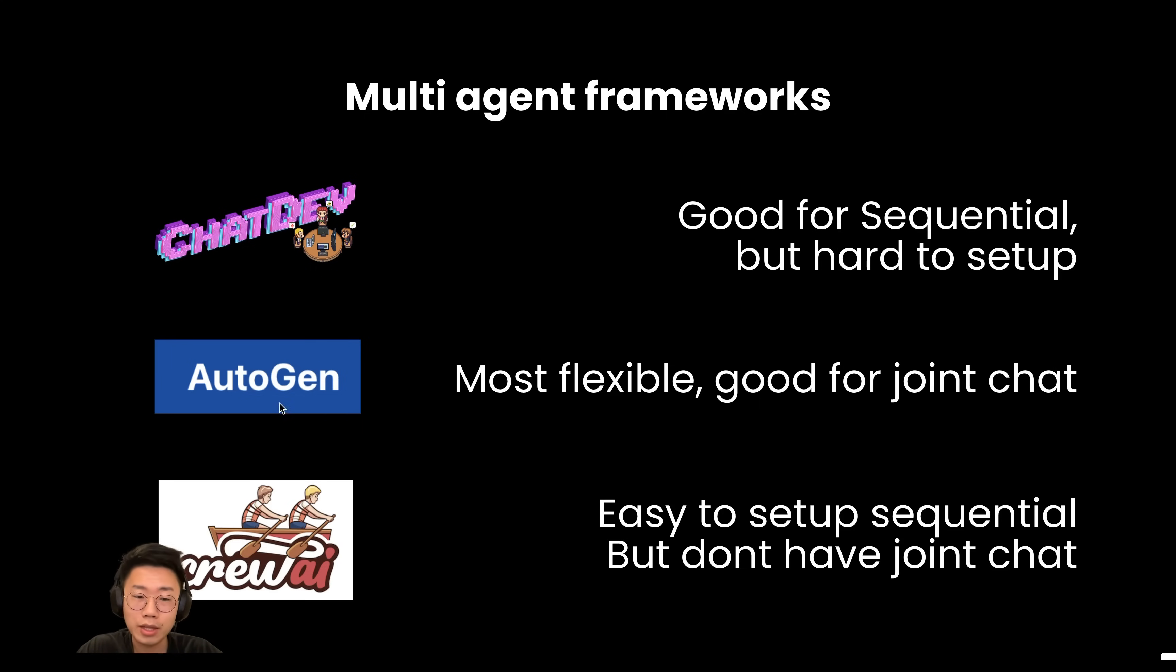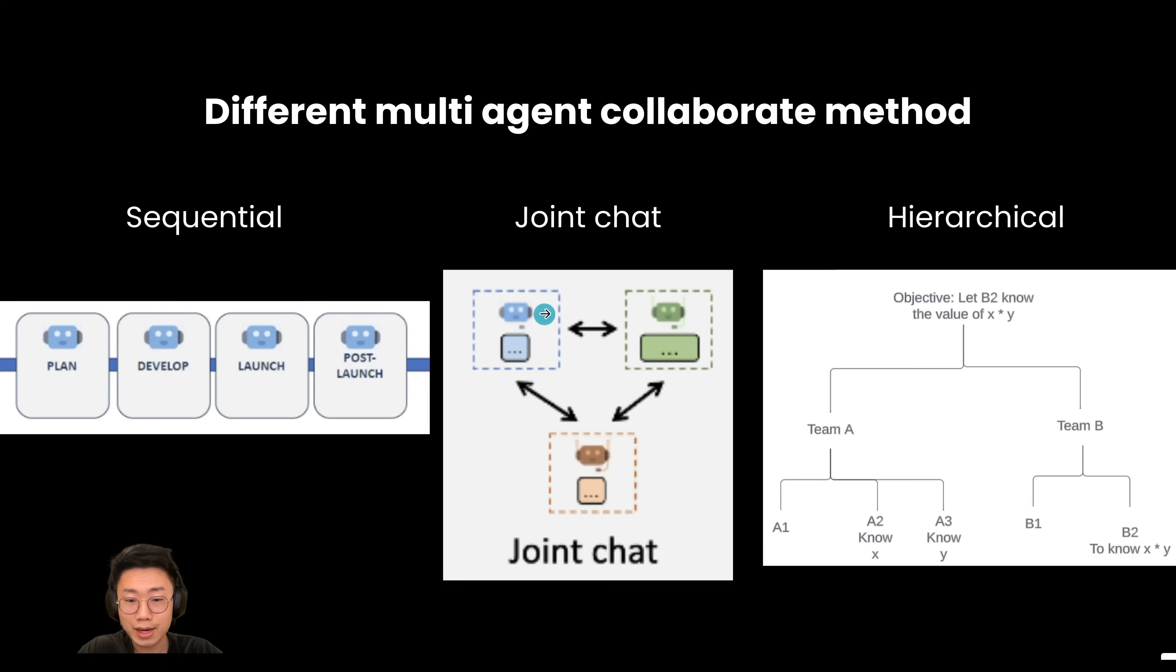And the best framework so far, in my opinion, is still Autogen where it is super flexible and probably the only framework that allows you to set up those joint chats or hierarchical chats with just a few lines of code.